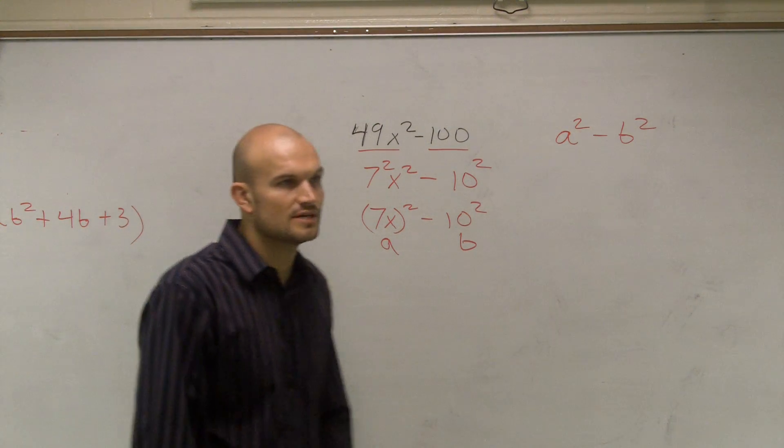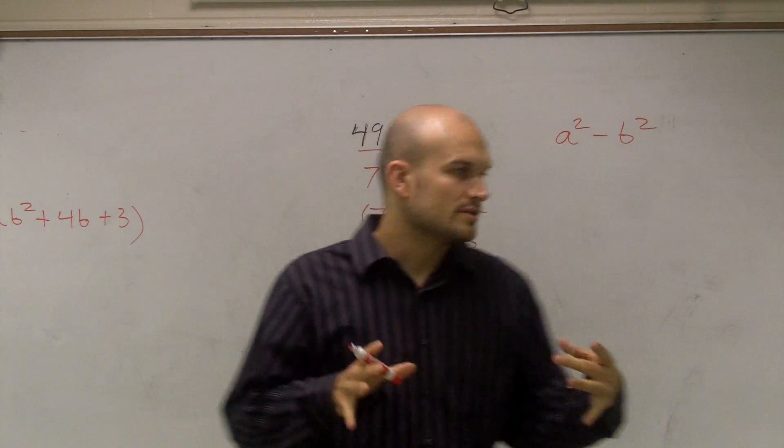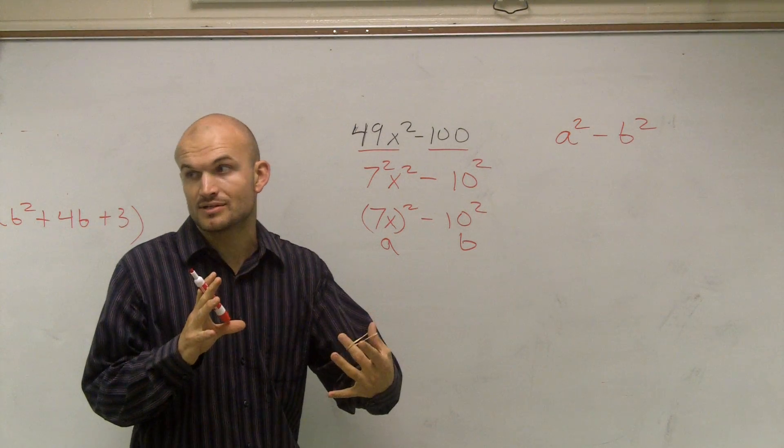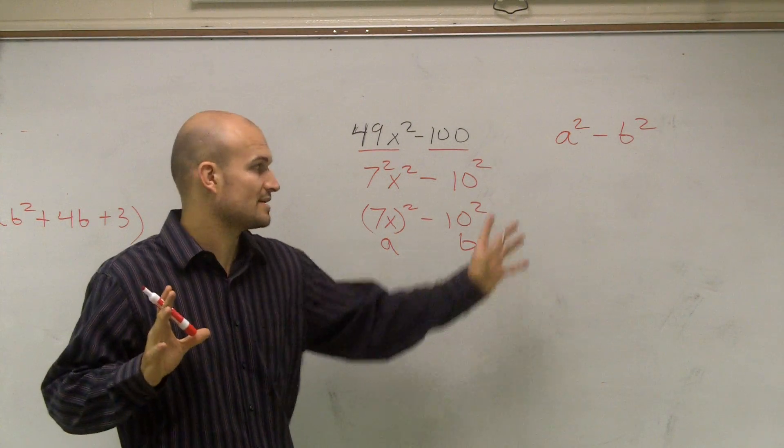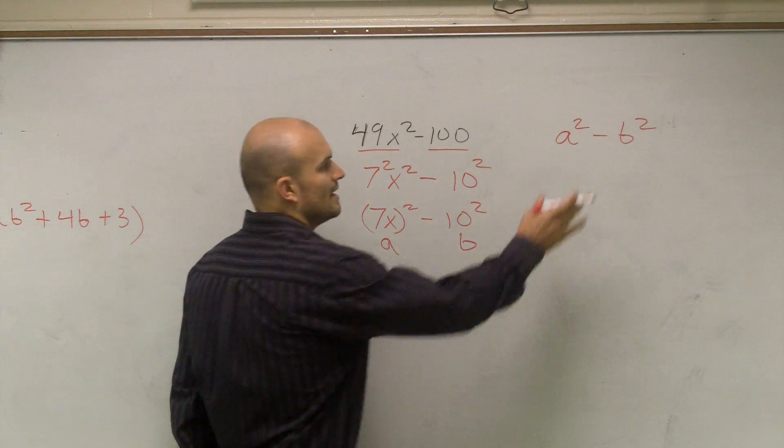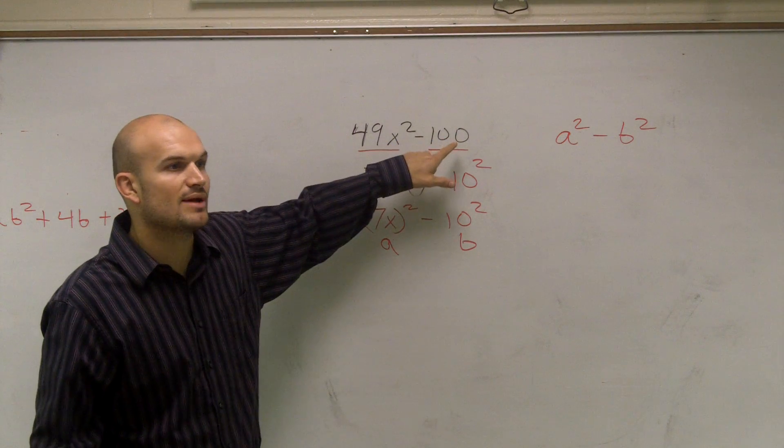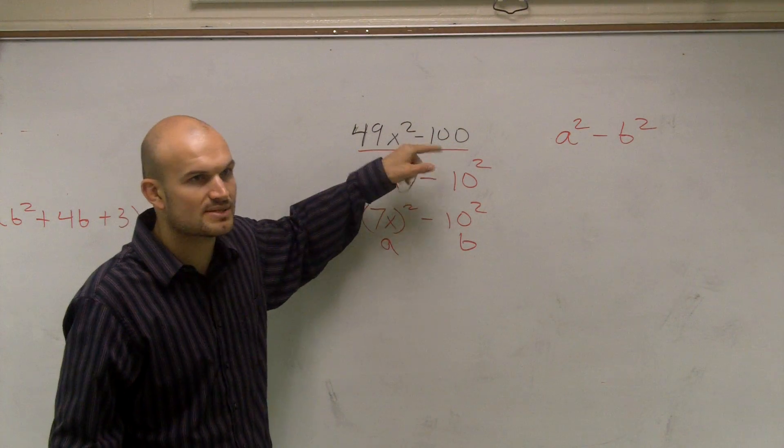Now, what does the difference of two squares tell us? The difference of two squares tells us when we're factoring special factors, it's the exact opposite. A squared minus B squared, if you guys notice, there's no middle term. We only have a square number and our constant.